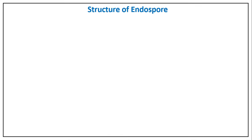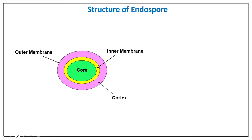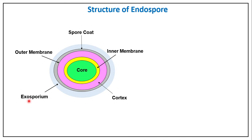For the structure of endospores, ultrastructural study requires electron microscopy. Starting from inside and moving outward: the innermost portion is the core, surrounded by the inner membrane. Outside the inner membrane is the cortex, followed by the outer membrane, then the spore coat. Some spores also have an outermost layer called the exosporium, though it is not present in all spore types.